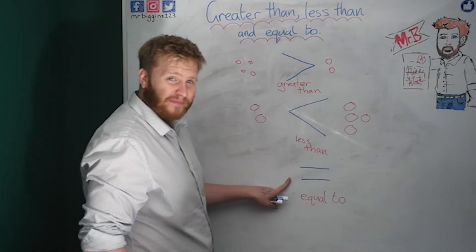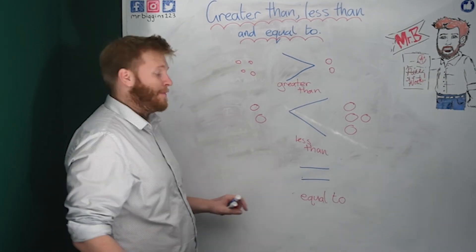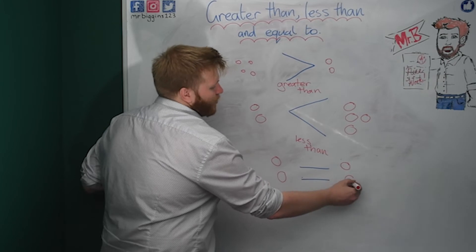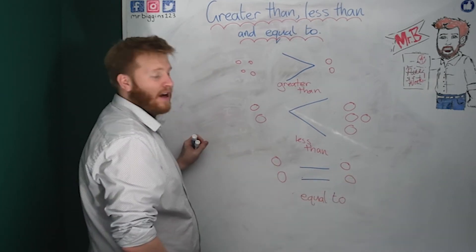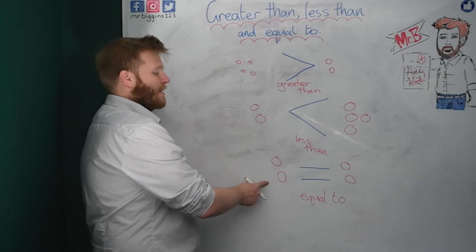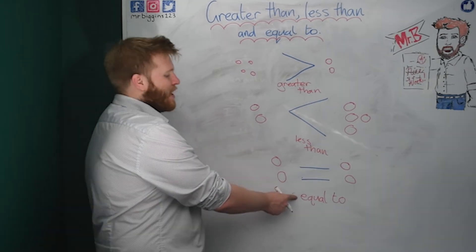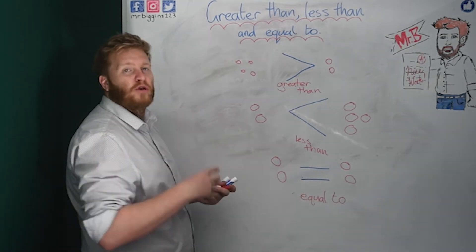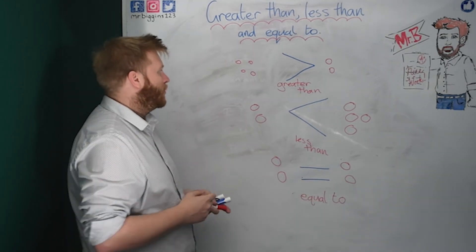Now our last one, our equals sign. Equals means the same as. So that would look something like that. I've got two counters here and two counters there. So I am saying that this group is equal to, the same as, that group.